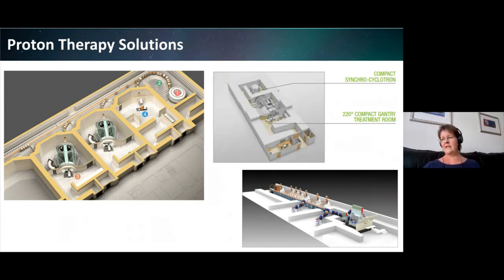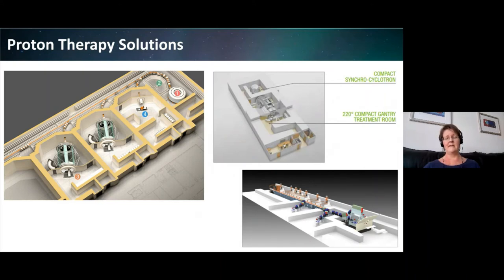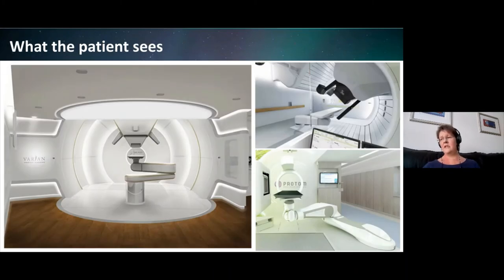There are also single-room solutions — for example, the IBA Proteus ONE — which include compact accelerators and less-than-360-degree rotation gantries with more patient movement. Novel solutions are also being developed, such as a linear accelerator arrangement based on the injector for larger high energy accelerators like the Large Hadron Collider, and it's also possible to accelerate protons using high-energy pulsed lasers. These solutions might be important where you're trying to fit proton beam therapy into a limited space. Ultimately, there's little difference in patient experience between proton beam and traditional x-ray beam therapy, with immobilisers and patient-specific moulds used in the same way.